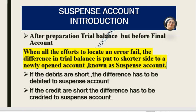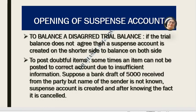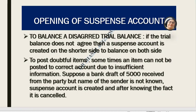When all efforts to locate an error fail, the difference remains in the trial balance. If the debit side is bigger, we put the difference on the credit side in the suspense account. If the credit side is smaller, we put the difference on the credit side. We open the suspense account when debit and credit totals do not match — we put it on the shorter side so that our trial balance matches.